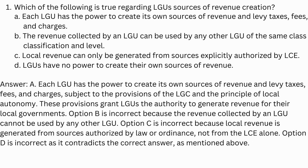Answer: Letter A. Each LGU has the power to create its own sources of revenue and levy taxes, fees, and charges, subject to the provisions of the Local Government Code and the principle of local autonomy. These provisions grant LGUs the authority to generate revenue for their local governments. Option B is incorrect because the revenue collected by an LGU cannot be used by any other LGU. Option C is incorrect because local revenue is generated from sources authorized by law or ordinance, not from the LCE alone. Option D is incorrect as it contradicts the correct answer.